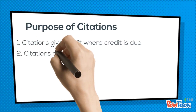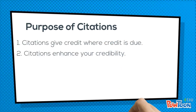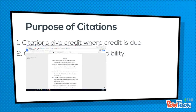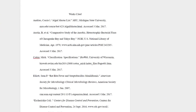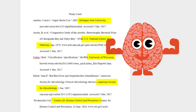The second reason for citations is for your benefit. Using citations supports what you are saying in your paper, and when you use experts to back up your thoughts and ideas, your credibility is enhanced. When others scan your works cited page, they should get a quick glimpse into the quality of your research efforts. A nice list of research-quality academic sources makes you look like you searched for the best quality information, making you look informed and knowledgeable about the topic.